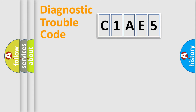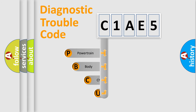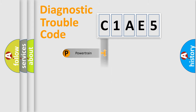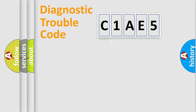First, let's look at the history of diagnostic fault code composition according to the OBD2 protocol, which is unified for all automakers since 2000. We divide the electric system of automobile into the four basic units: Powertrain, body, chassis, and network.